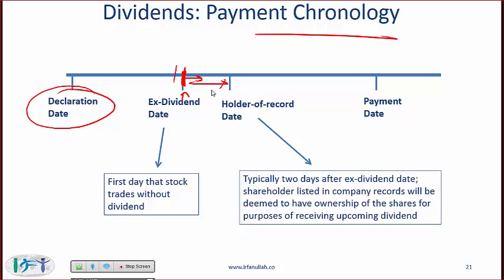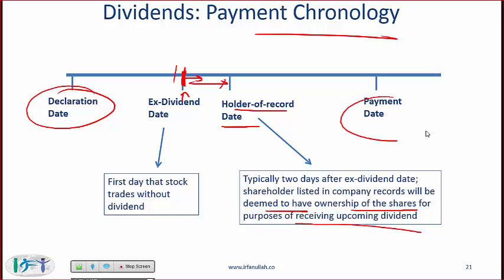Two days after the ex-dividend date is typically the holder-of-record date, where shareholders listed in the company records are deemed to have ownership of the shares for the purpose of receiving upcoming dividends. The payment date is then when the dividend checks are mailed out.